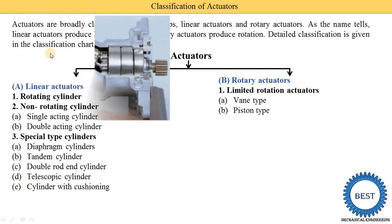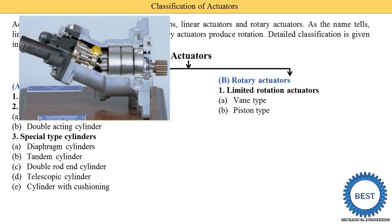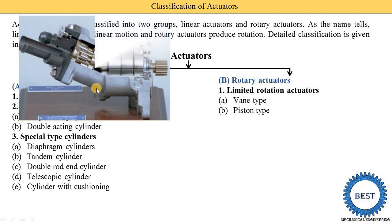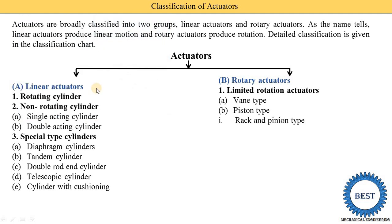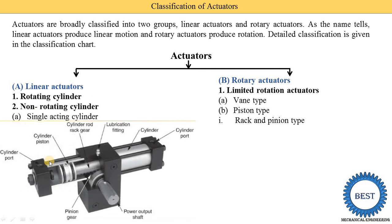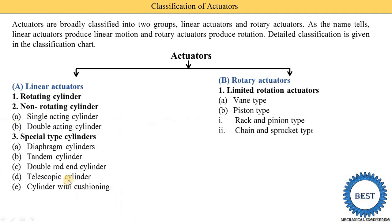The second limited rotation actuator is the piston type. In the piston type rotary actuator, there are two subtypes: first is the rack and pinion type — the rack and pinion gear mechanism is used here. The second subtype is the chain and sprocket type, where instead of a rack and pinion mechanism, a chain and sprocket is used.